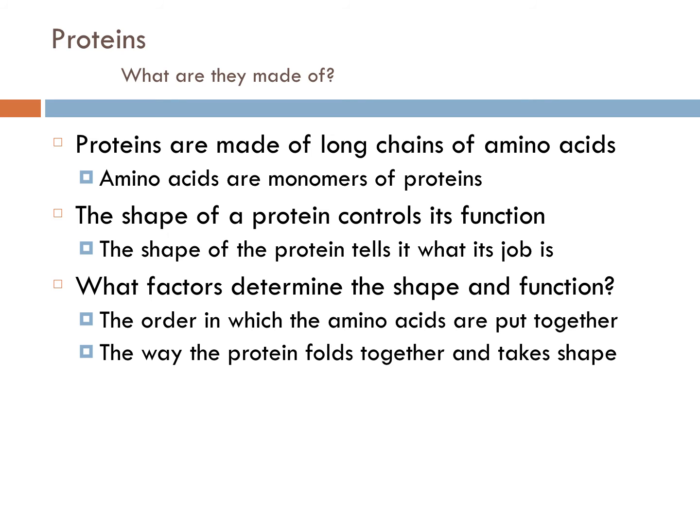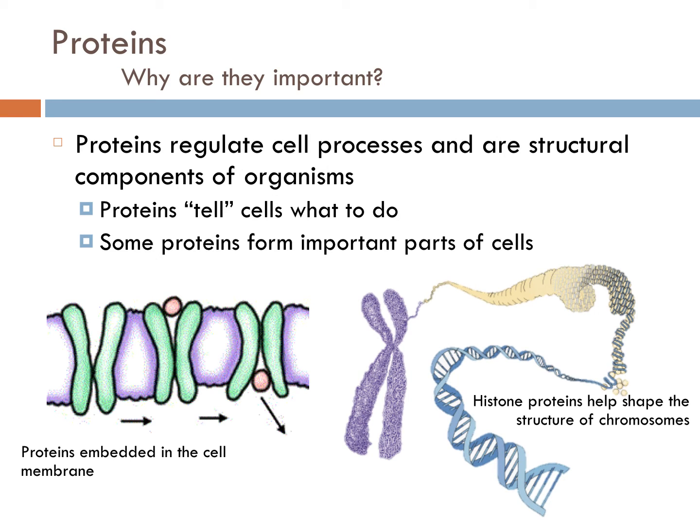Some things that determine the shape and the function are the way the amino acids are put together, so there's a specific order for each different protein, and then the way the protein folds together to take its shape. Proteins are important for cells because they regulate the processes of the cells and they comprise structural components of organisms. They tell cells what to do, and proteins also form some important parts of cells and other important structures.